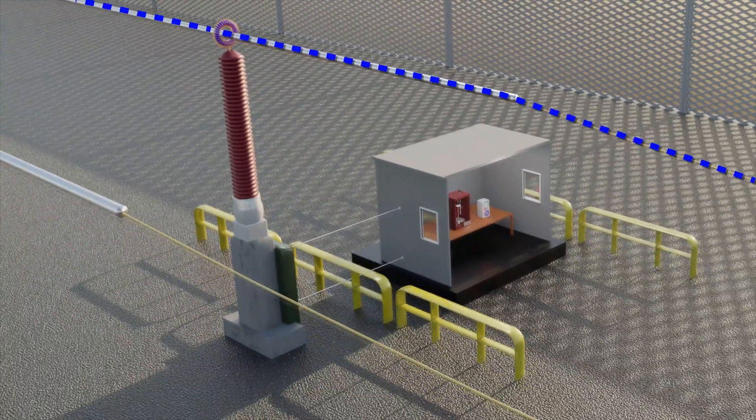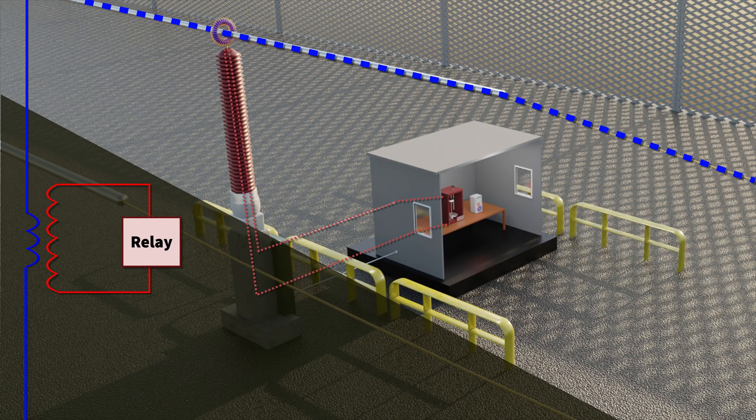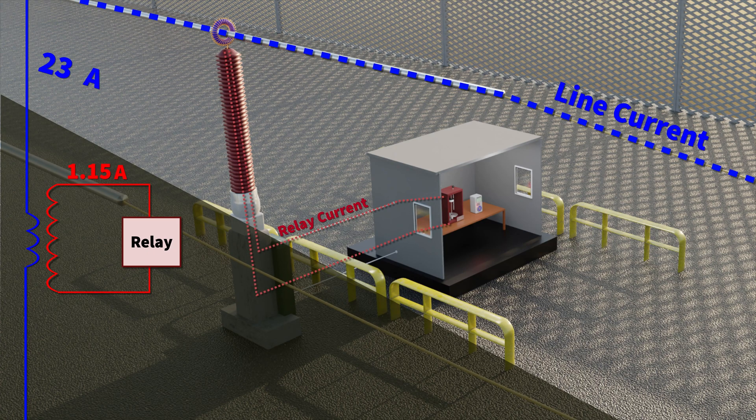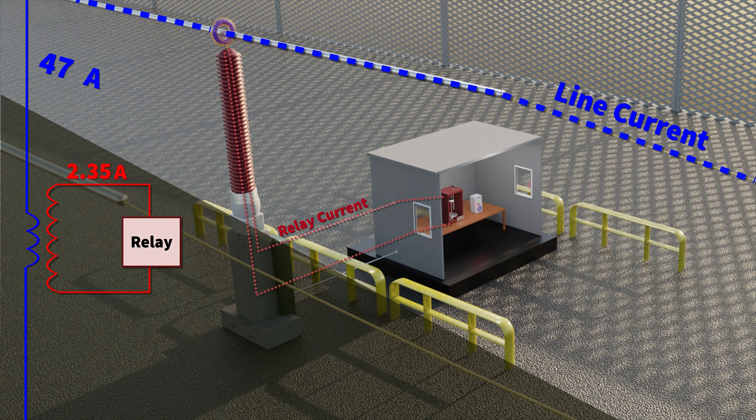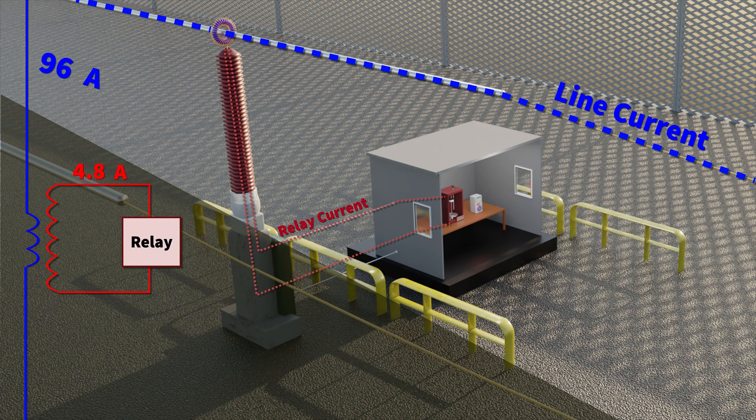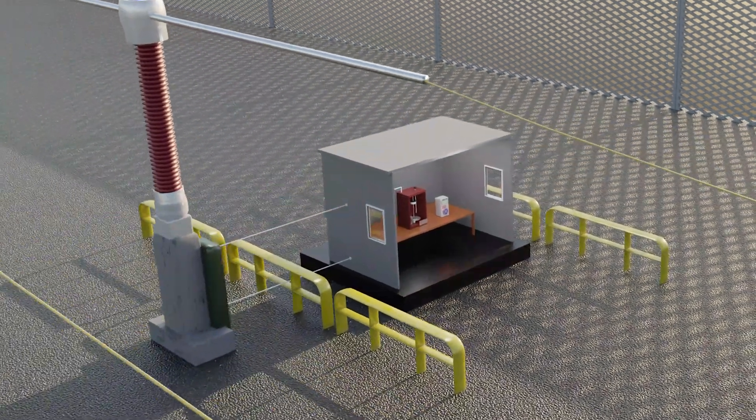Now in the electromechanical relays this secondary CT current is actually fed straight into the relay and has a direct effect on its operation. More on that a bit later. But as you can see here we know the line current because we know the CT ratio. So in this case if 100 amps is flowing we know that there's going to be 5 amps on the CT secondary.